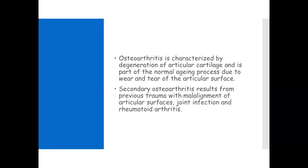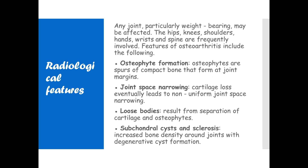There's also secondary osteoarthritis which results from previous trauma with malalignment of articular surfaces, joint infection, and rheumatoid arthritis. So there's primary osteoarthritis due to the normal aging process, and then secondary osteoarthritis due to previous trauma that has led to malalignment of the articular surfaces, joint infection, and rheumatoid arthritis.